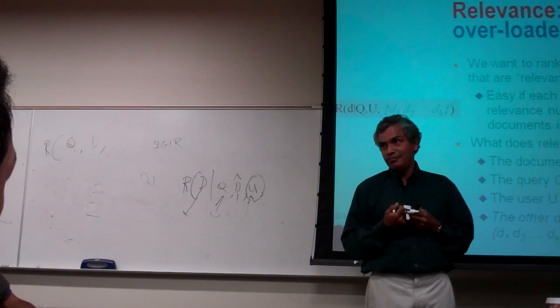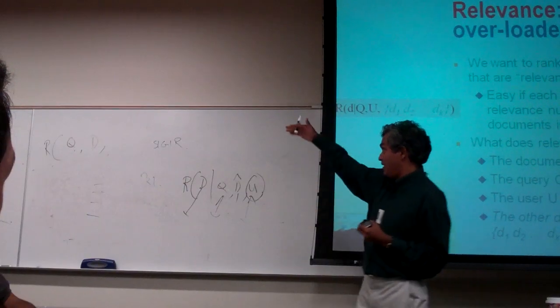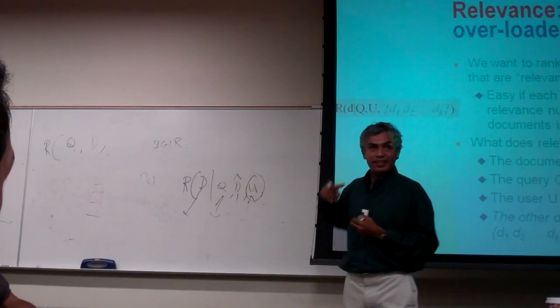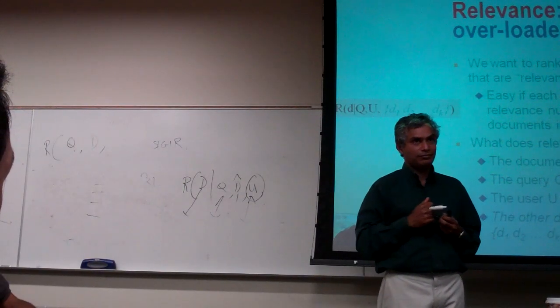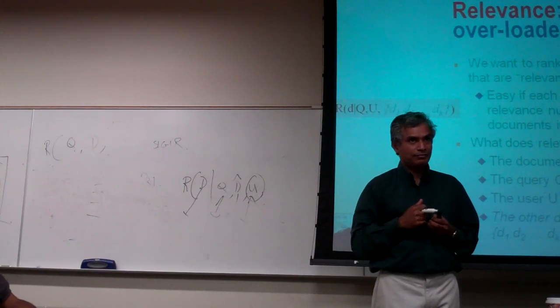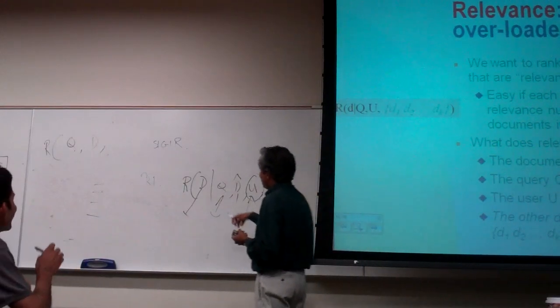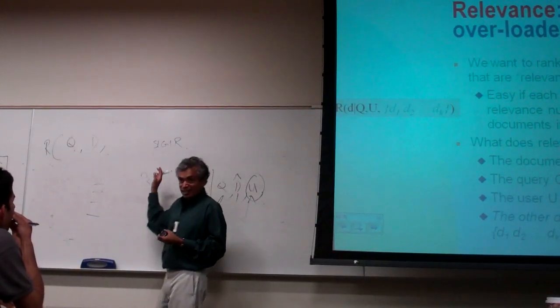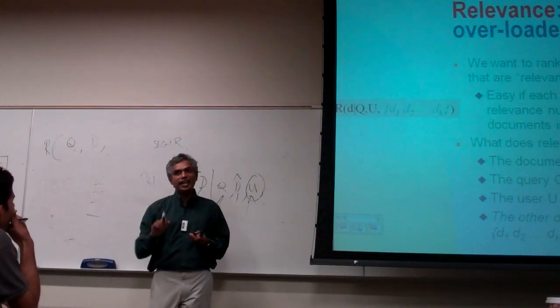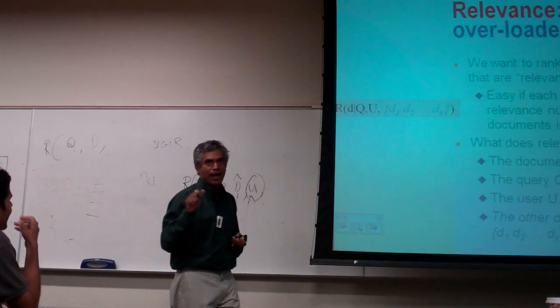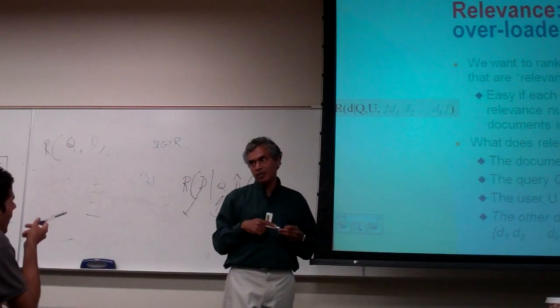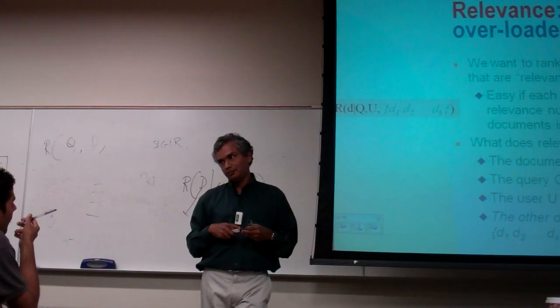They'll get an A. And A is being at the top of the list. So my point is that by just reducing the relevance number you give, you can handle part of that document universe issue.